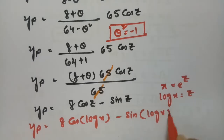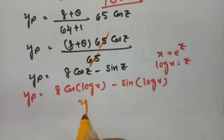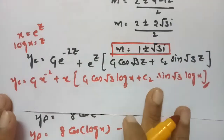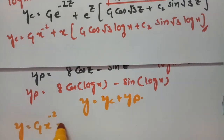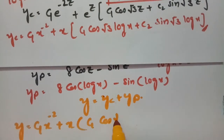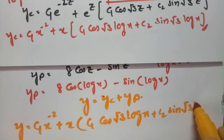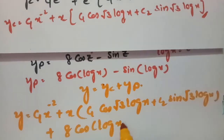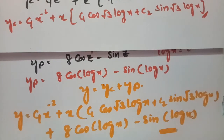The general solution y = yc + yp is: y = c₁x^(-2) + x·[c₂ cos(√3 log x) + c₃ sin(√3 log x)] + 8 cos(log x) - sin(log x). This is the final answer for the first most important question.